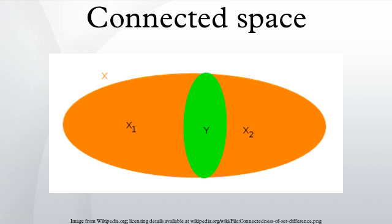However, every graph can be canonically made into a topological space by treating vertices as points and edges as copies of the unit interval. Then one can show that the graph is connected if and only if it is connected as a topological space.